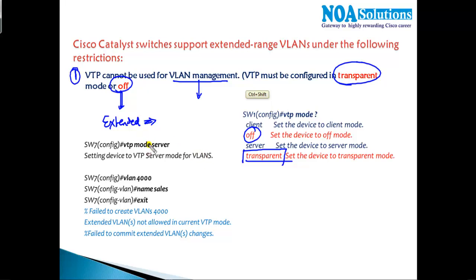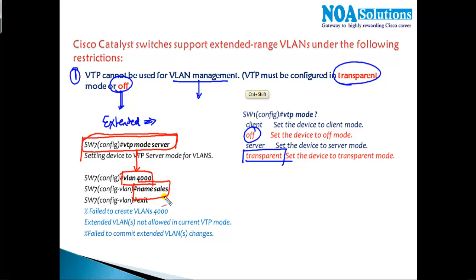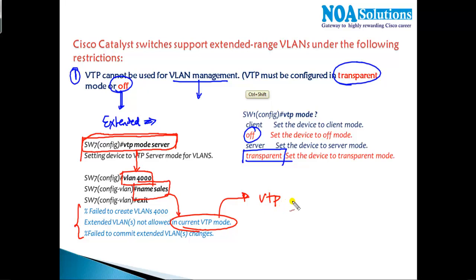In the screenshot, I have a switch configured in VTP server mode. Since extended VLANs only work in off or transparent mode, when I tried to create VLAN 4000 with the name 'sales' while in server mode, you can see the message: 'Failed to create VLAN 4000 because extended VLAN is not allowed in the current VTP mode.'